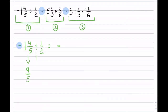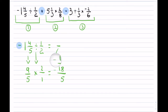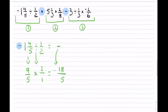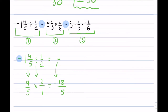Division changes to multiplication by the reciprocal. So this equals 18 over 5, and it's negative. That is the first term.